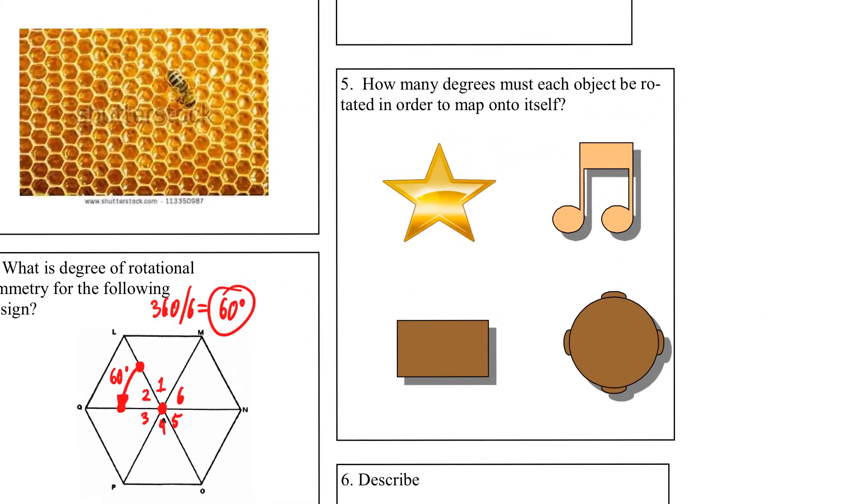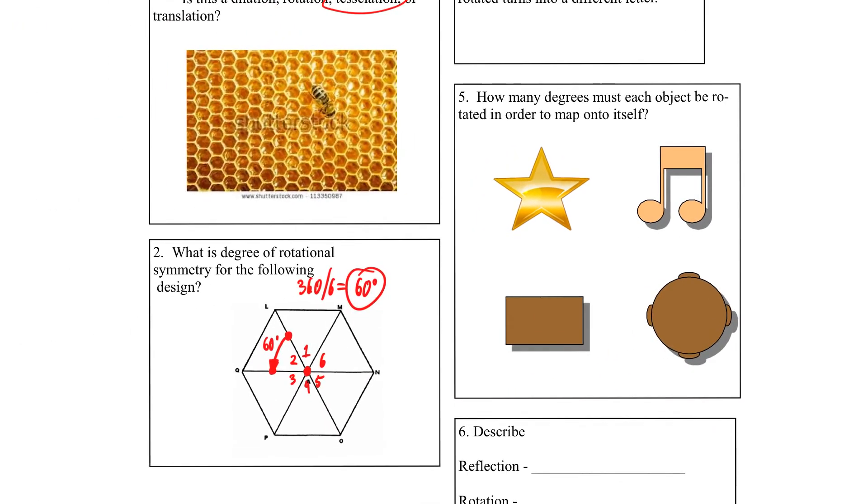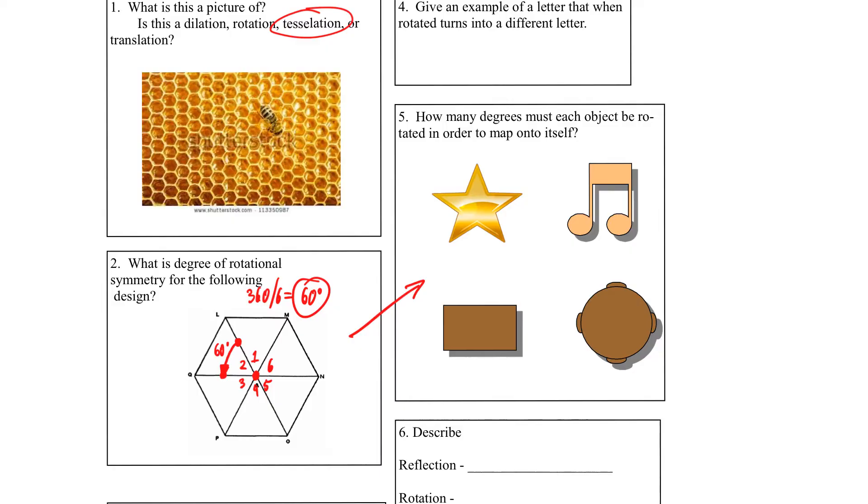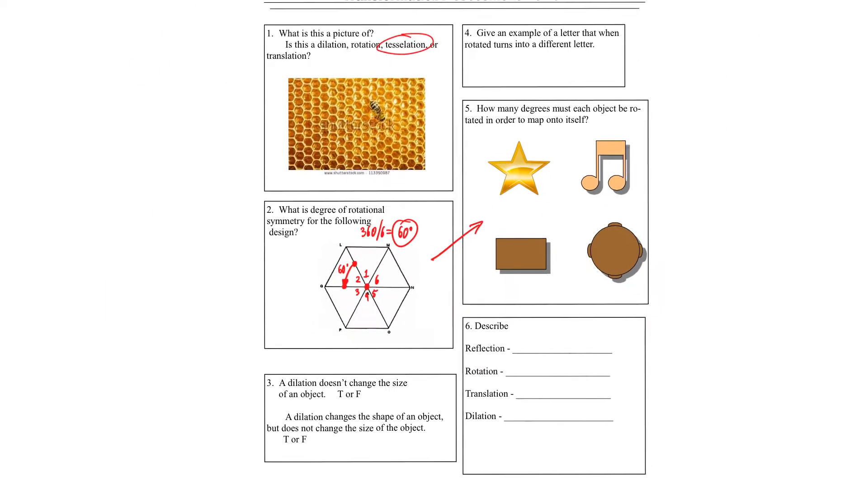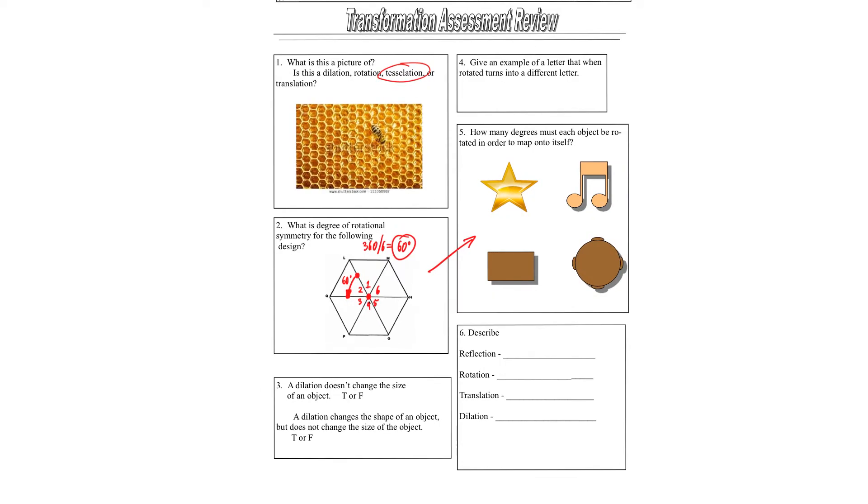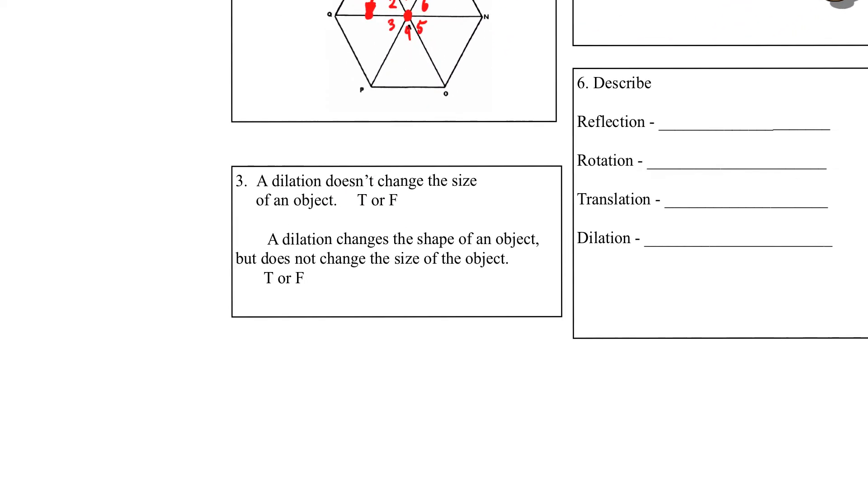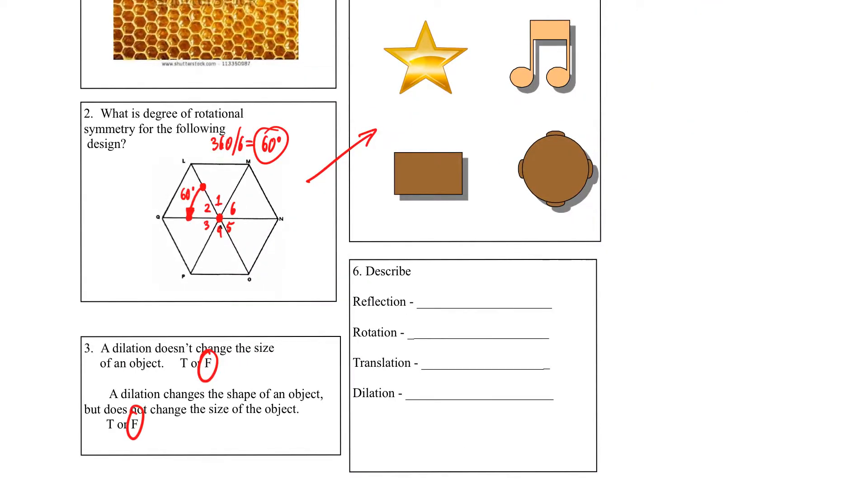Okay, so you're going to do the same thing on number five. That's what you're doing here on number two, telling how many degrees you have to rotate it. Okay, you're good there. You should be good there. So I'm going to go ahead and let you get grouped up, get to work on this. We'll come back together at the end of class and go over some more of it together. All right, I already did one and two. So number three, a dilation does not change the size of an object. False. It does change it. A dilation changes the shape of an object but not the size. False. That's false also. It changes the size only.